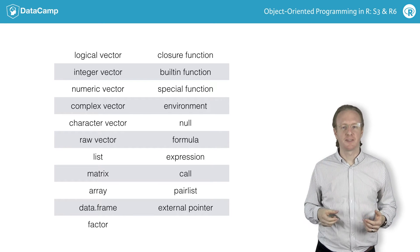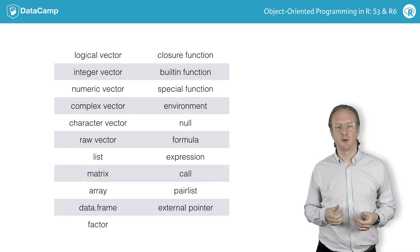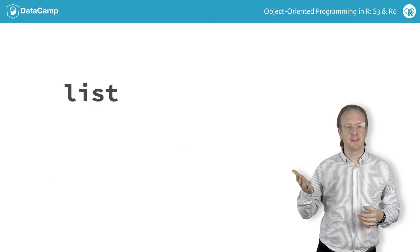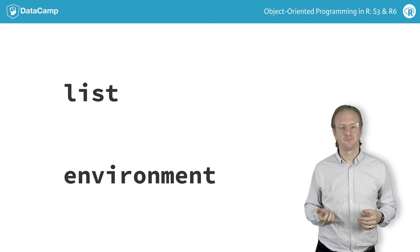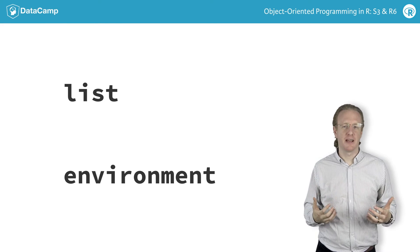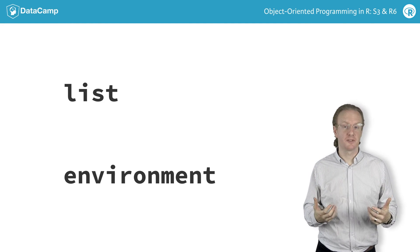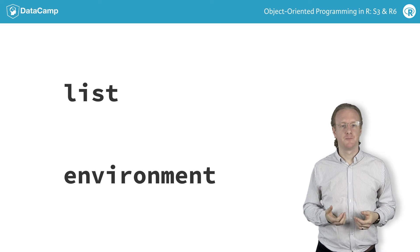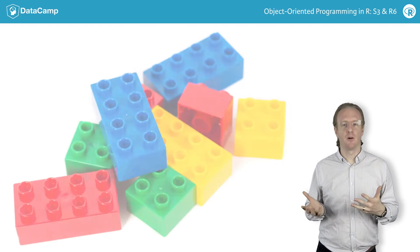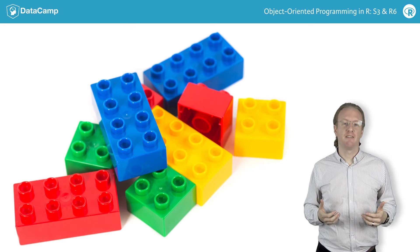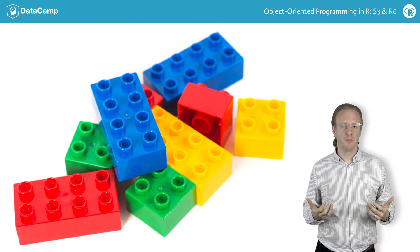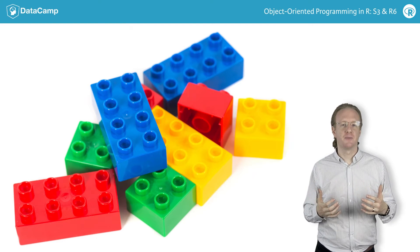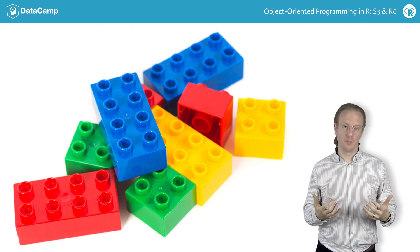There are two variable types here that become important for object-oriented programming, lists and environments. Because these variable types can contain other variables, you can use them to create many other, more complex types. Think of it like Legos. In this case, you have 20 types of Lego block, but you can use those blocks to build an infinite number of more complex structures.